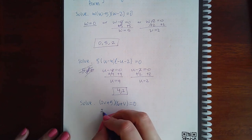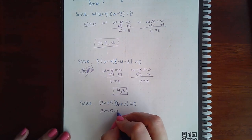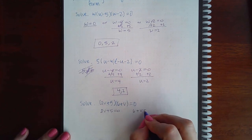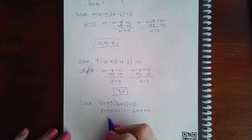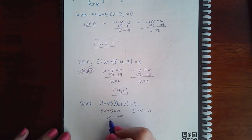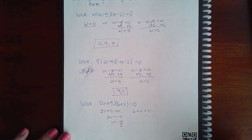Similarly here, you would take this factor equal to zero, this factor equal to zero. I would minus five on both sides, and then divide by two on both sides. I get negative five halves as one solution.